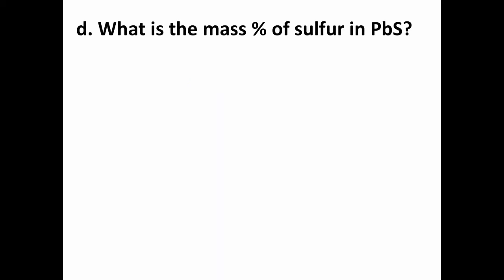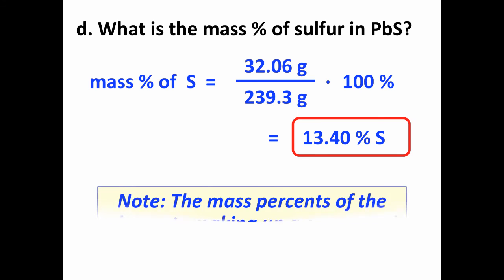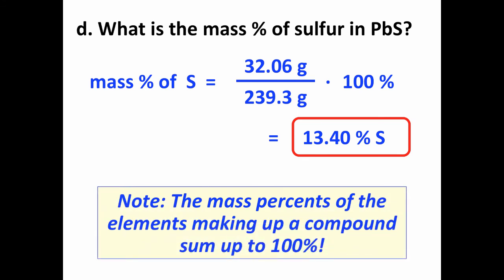Very similarly, the mass percent of sulfur is going to be the mass of sulfur compared to the mass of total compound, multiplied by a hundred, gives you percent: 13.40 percent. And since this compound is made up of two elements only, then the mass percent of sulfur and the mass percent of lead is going to add up to a hundred percent. If we had more substances, then we'd add all of them together and that would give us a total of a hundred percent.